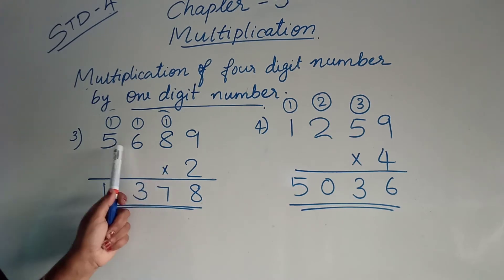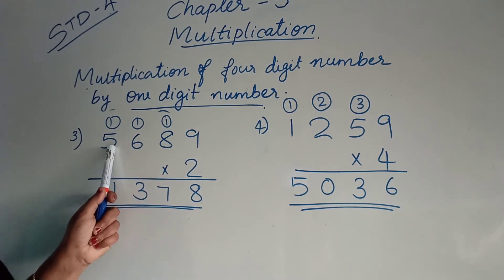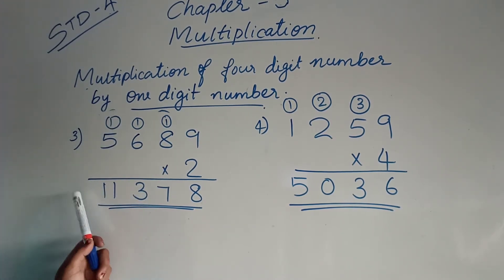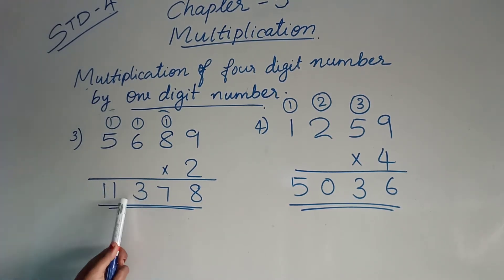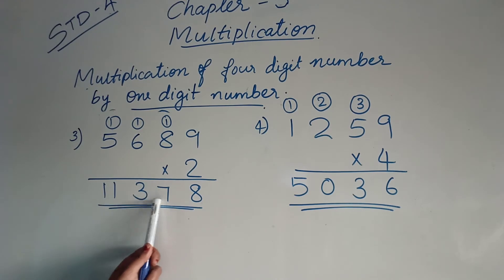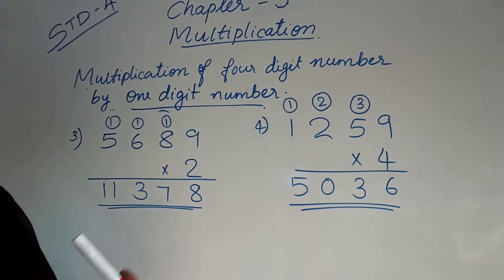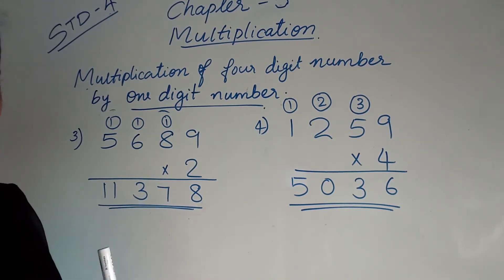Then, 2 into 5. 2 fives are 10. 10 plus 1 is 11. So 11,378 is the answer for this question.